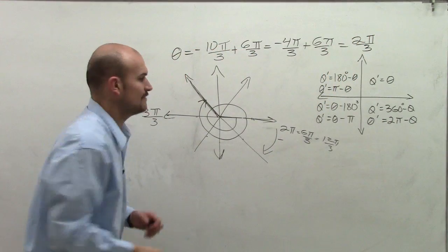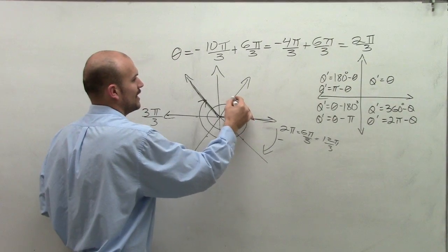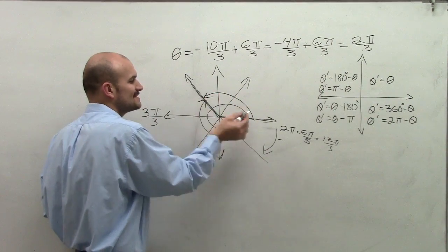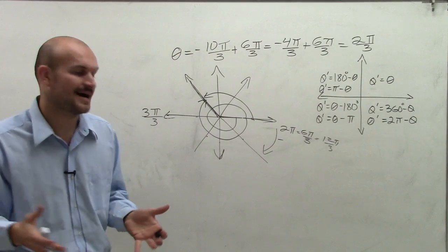And when graphing 2 pi over 3, what I notice is 2 pi over 3 is still going to give me the exact same terminal side.